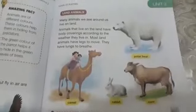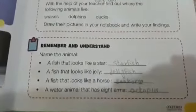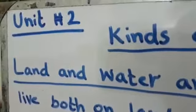Good morning, Class 2 students. It's your science class. We have done Unit 1 and are now on Unit 2: Kinds of Animals. We have done the reading of animals — land animals or water animals — and covered those three topics. Today we are going to discuss land and water animals on page number 13 of Unit 2.